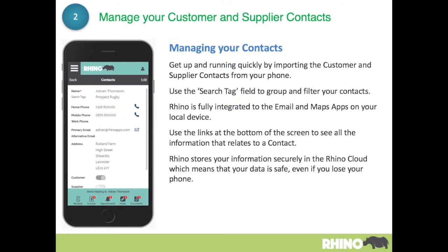You can manage all of your key contacts. You can apply search tags against each contact to quickly filter and group them. You can also use the email, maps, and telephone functions by tapping on them — for example, tapping will call the number displayed on screen. You can use the links at the bottom of the screen to see everything that relates to that contact. All of this information is stored in the Rhino cloud, so it's secure. If you lose your phone, it doesn't matter — there's no data stored on the phone; it's stored in the cloud.